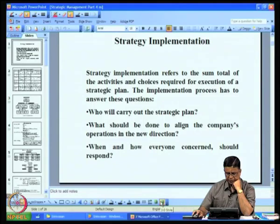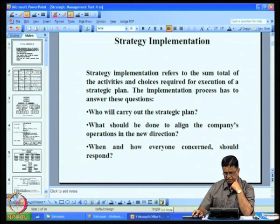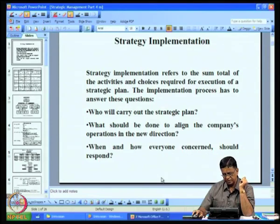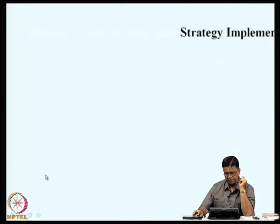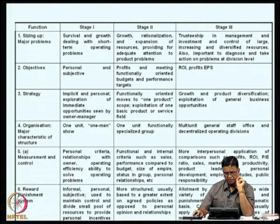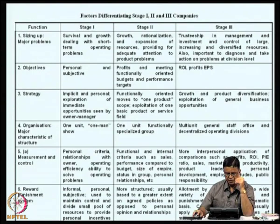Then we came to the strategic implementation side. We tried to sum it up by saying the implementation process has to answer these questions: who will carry out the strategic plan? What should be done to align the company's operations in the new direction? And when and how everyone concerned should respond? We also came to different types of organizational stages — stage 1, stage 2, stage 3 — and what are the factors differentiating them.